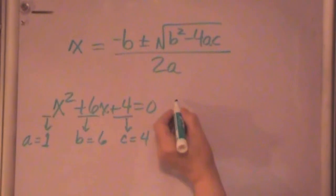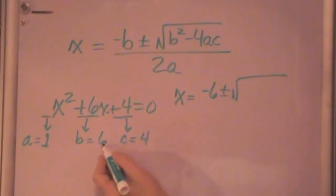So all we have to do is plug them into our quadratic formula. So x is equal to minus b is minus 6, plus or minus the square root of b squared, which is 36, minus 4 times a, which is 4, times c, which is 4, which is 16.